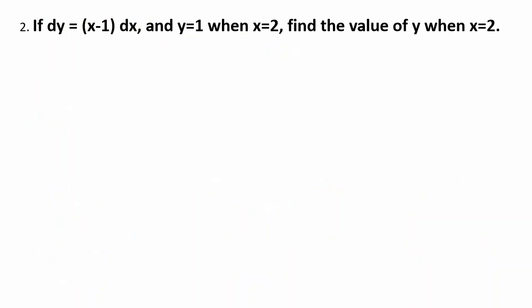If dy equals (x minus 1) dx and y equals 1 when x equals 2, find the value of y when x equals 4. Solution: